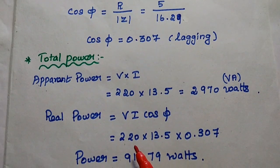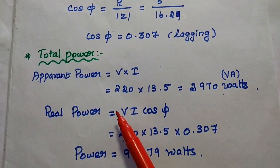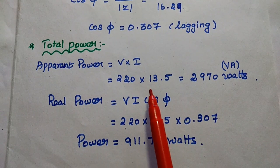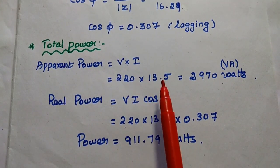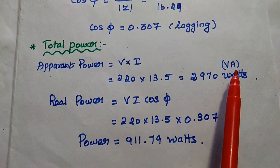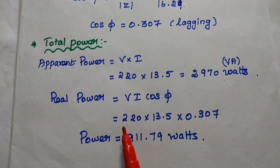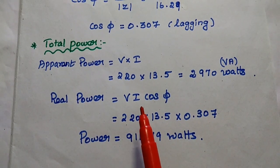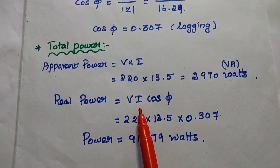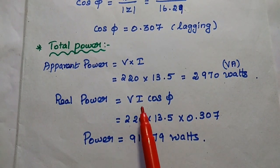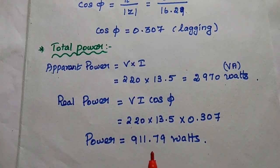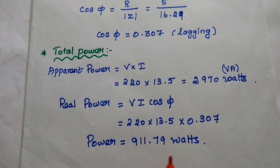Next we are going to find out the total power. First, apparent power is V into I. Substituting 220 for voltage and 13.5 for current, we get 2970 volt ampere. Next the real power — the power dissipated due to the resistor alone — is V into I cos phi. V is 220, I is 13.5, cos phi is 0.307. Then we can get the answer as 911.79 watts.